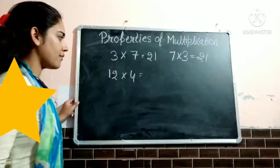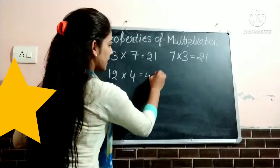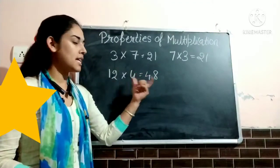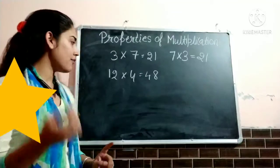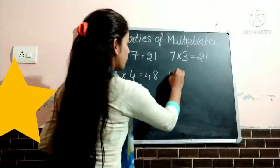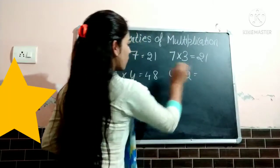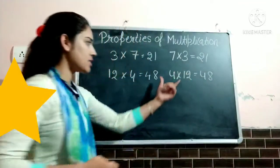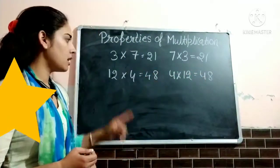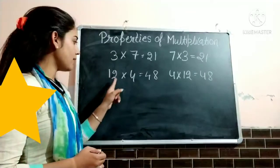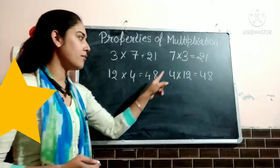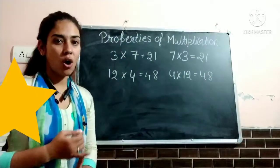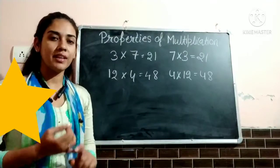Let us take one more example. 12 multiply 4 is equal to 48. And if I will change the order of this number — 4 into 12 — again 48. So here I changed the order, but product remains same. In 12 into 4, product is 48, and in 4 into 12, product is again 48. So when we will change the order, the product will be same.